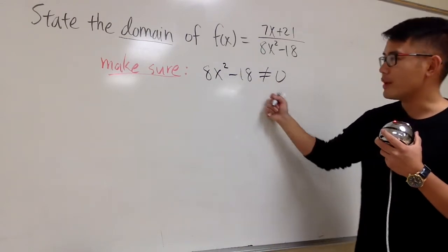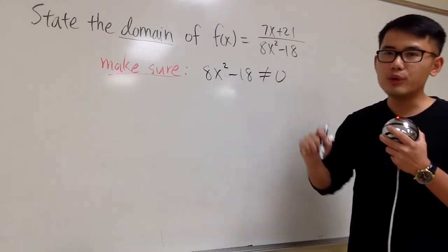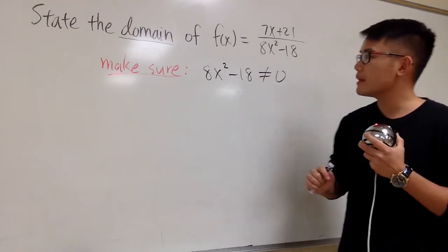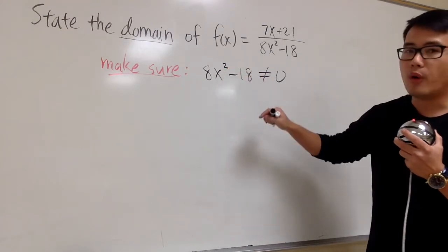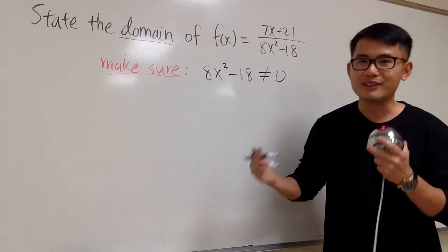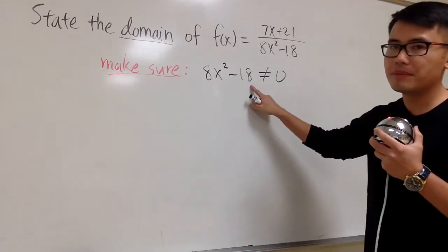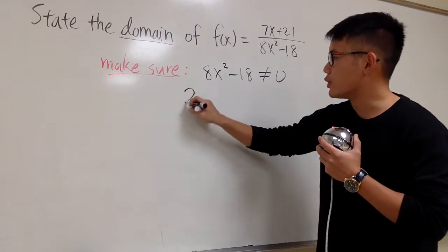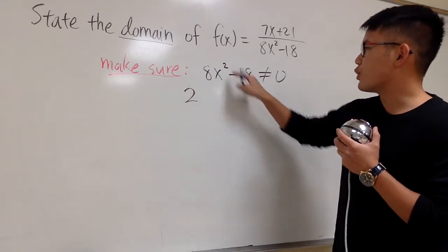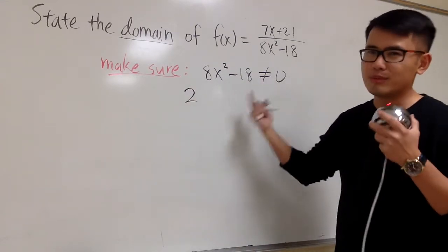And now, we can just solve for the x values that it cannot be. Here we have x to the second power, so to solve this, we have to factor things out. We see that we have an 8 here, and this is 18. First of all, we can factor out a 2. This has x², but this has no x, so the 2 is the most that we can do.